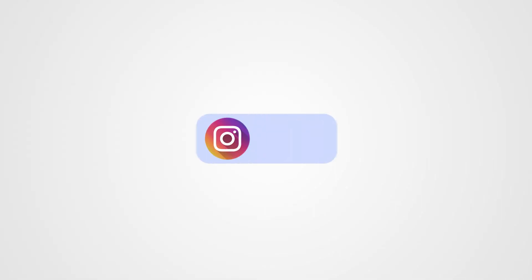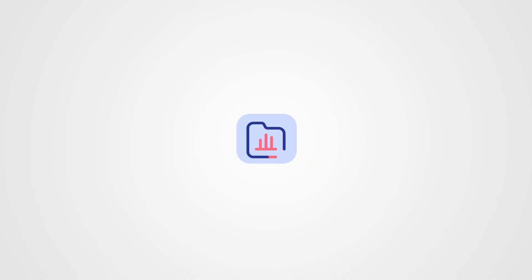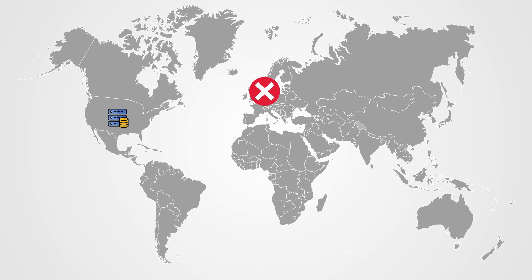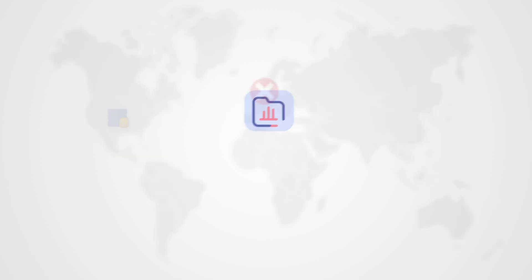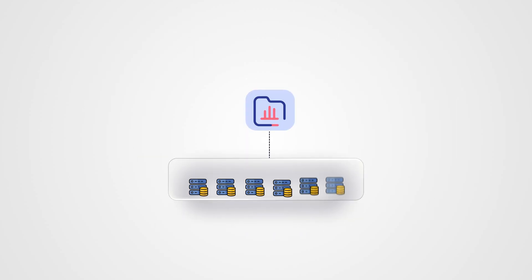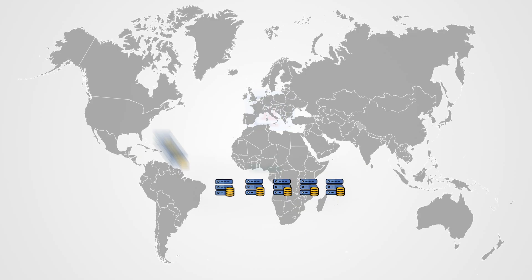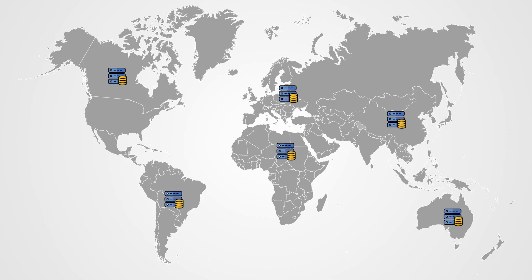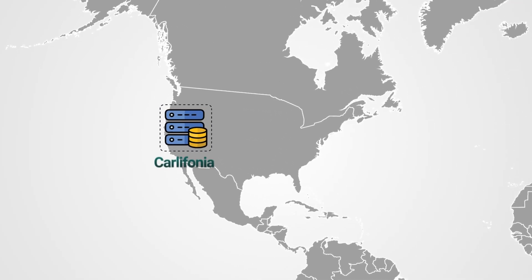First, we have to understand what a distributed system means. When you use Instagram, Netflix, or any major software application, your data isn't just stored in one database sitting in one location. Instead, your data is distributed across multiple servers called nodes, spread across different regions all around the world. If you think about it, this setup makes sense.